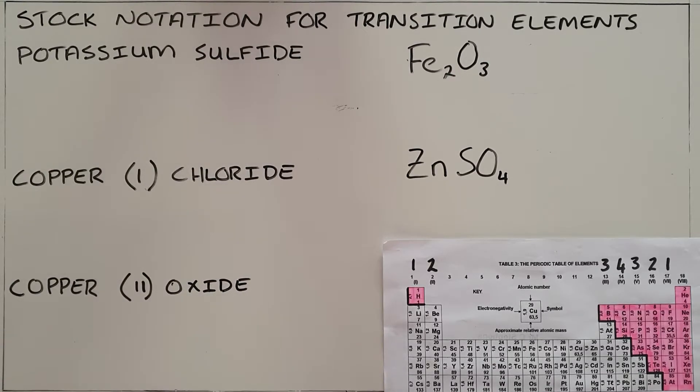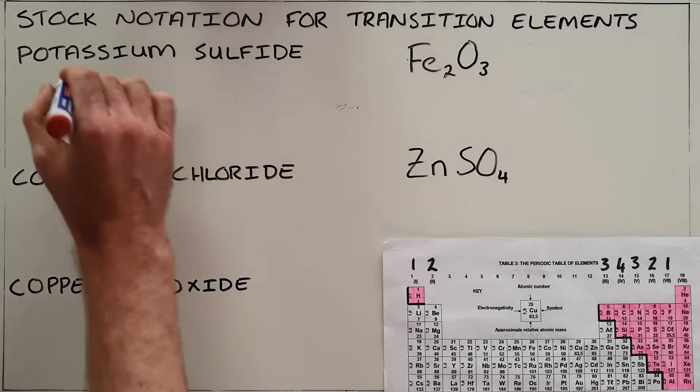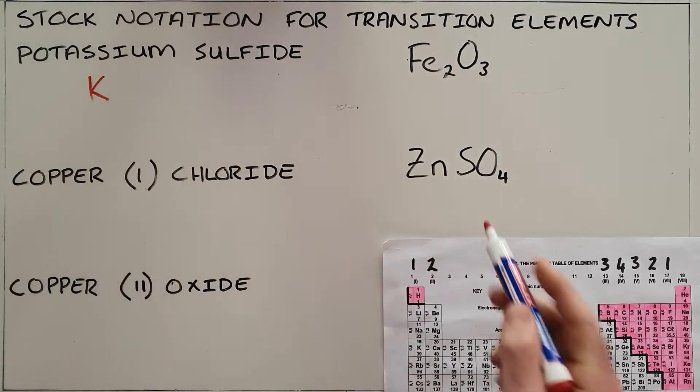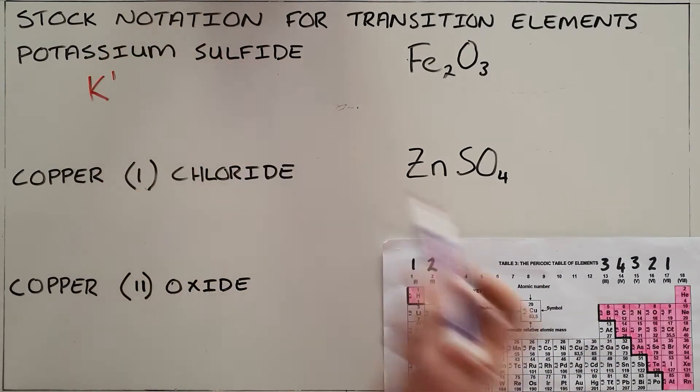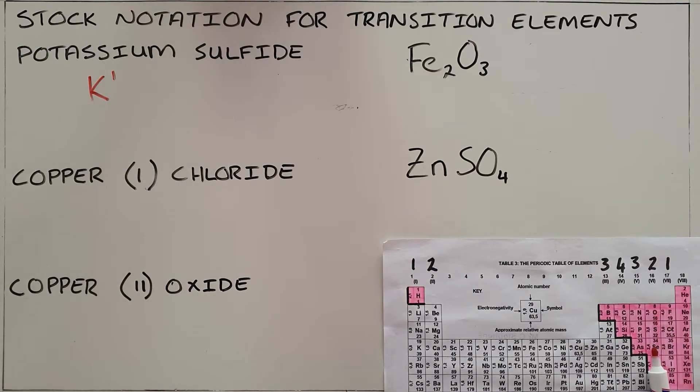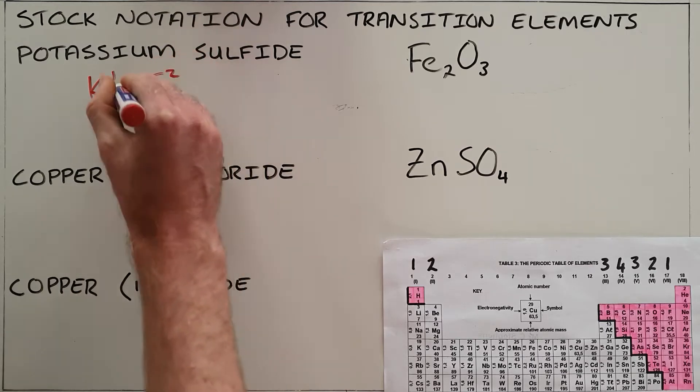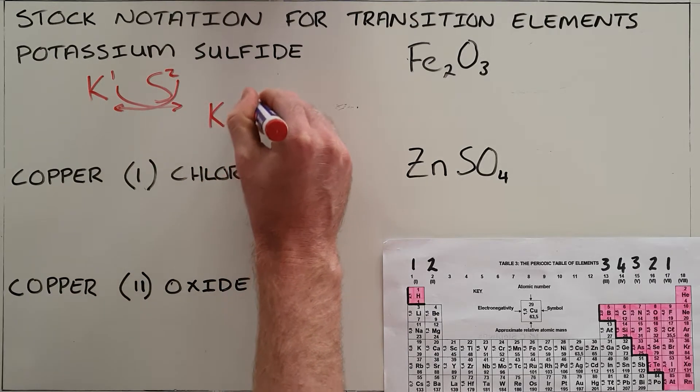In the previous video we used the periodic table to show how we can determine the valency for various elements and therefore write the formula for their compounds. For something like potassium sulfide, potassium in group 1 has a valency of 1, sulfide in group 16 has a valency of 2, and they swap valencies to give the formula K₂S.